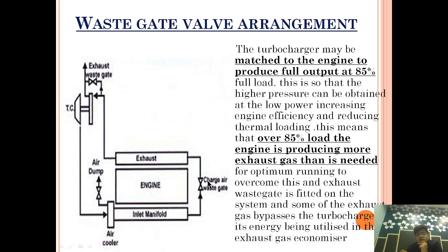If the engine is operating at 100% load, the exhaust waste gate comes into use, and as the turbocharger is generating more air, the extra air can be dumped using the air dumping valve. The reason we match the turbocharger at 85% load is so that at low power the turbocharger is highly responsive and more effective. Over 85% load the engine produces more exhaust gas than is needed for optimum running; to overcome this, an exhaust waste gate is fitted so some exhaust gas bypasses the turbocharger, with its energy utilized in the exhaust gas economizer.